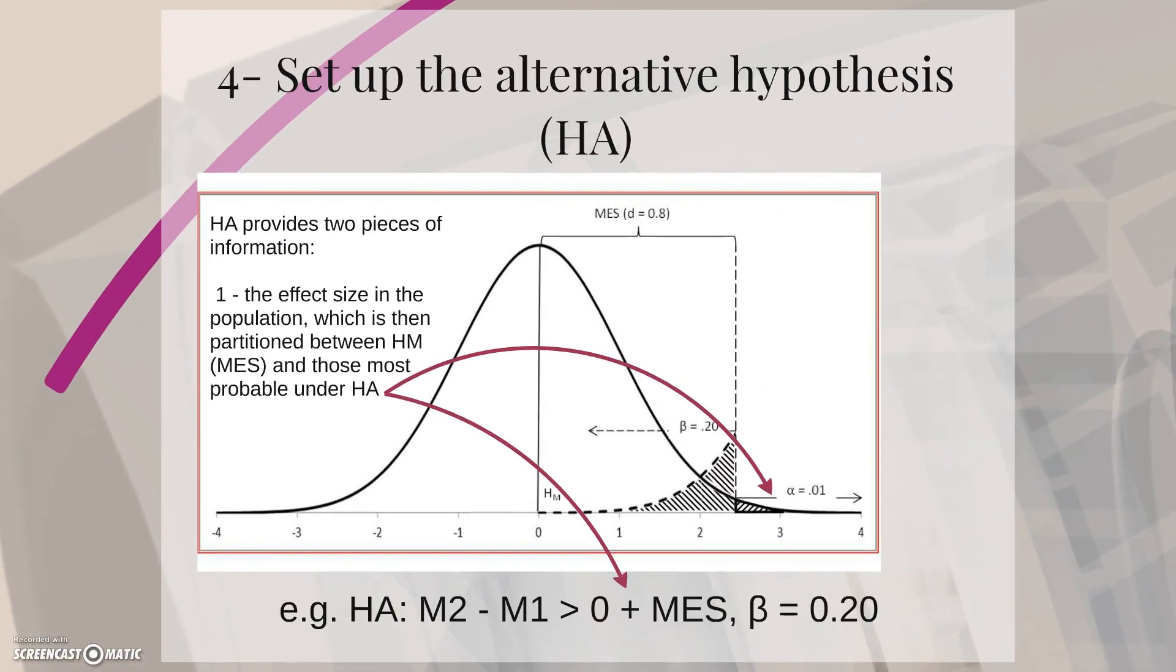The fourth step will be to set up the alternative hypothesis. And we know that the alternative hypothesis provides two pieces of information. One, the effect size in the population, which is, as we saw, partitioned between the main hypothesis or minimum effect size and those effect sizes most probable under the alternative hypothesis.